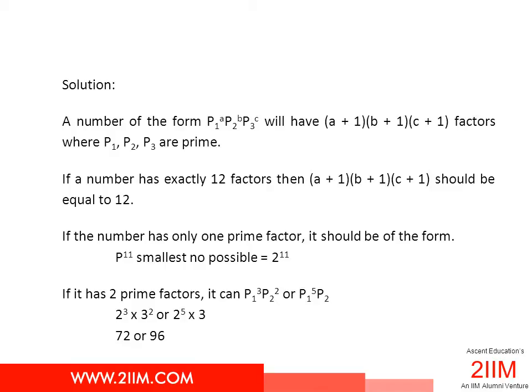So if a number has exactly 12 factors, then this combination (a+1)(b+1)(c+1) and so on should be equal to 12 exactly. This is possible with exactly one prime factor, just p₁, in which case the number will be some prime power 11. So p^11 is a possible number which has exactly 12 factors. The smallest such possible number is 2^11. So 2^11 is one number which has exactly 12 factors. Let us see if we can find a smaller number than this.